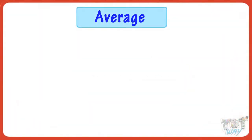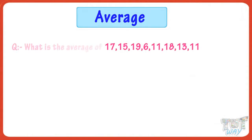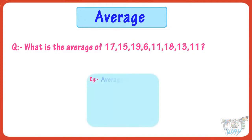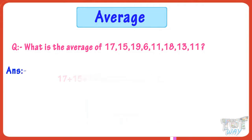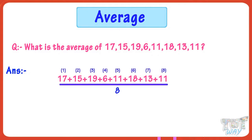Here is a list of a few numbers. What if I ask you the average of these numbers? Average is the sum of all numbers given divided by the number of numbers given. So here what we will do is we will add up all the 8 numbers and divide the sum by 8. That is the number of numbers you have. We have 8 numbers, so we are dividing the sum of numbers by 8.